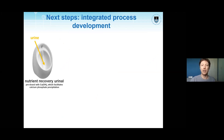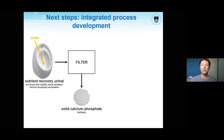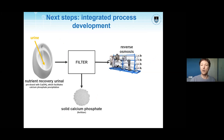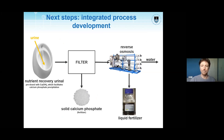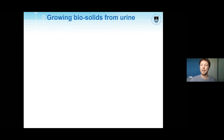The next steps are to integrate this process: we take our urinal output, filter out the calcium phosphate, and then concentrate the remaining stream using reverse osmosis to produce water and a liquid fertilizer. We also took this a step further and grew bio-solids from human urine.